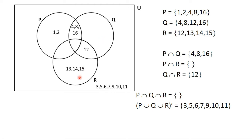Moving to set R: the members are 12, 13, 14 and 15. We can see that 12 is shared between Q and R, so it goes in the Q intersection R region. Members 13, 14 and 15 belong to R alone and are written in that region. The region representing P intersection R is empty because P intersection R is a null set, and the region for P intersection Q intersection R is also empty.